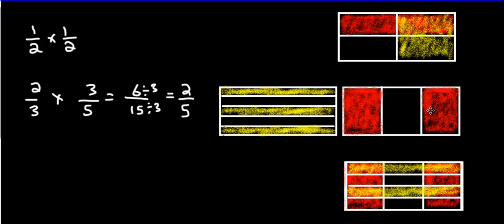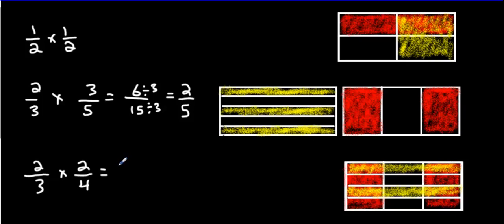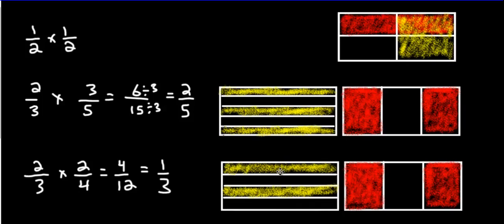Now try the last one on your own. What's your first fraction? Did you get two out of three for one of them? And did you get two out of four for the other one? When you multiply them, the answer is going to be four out of 12. Now reduce it — one third. If that's what you got, you're on the right track. Let's double check: we have two over four and two out of three, and our numbers match up.